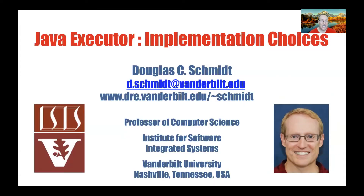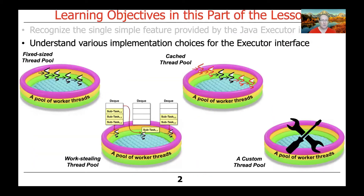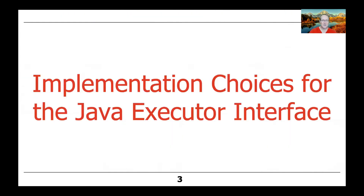Now, let's talk about how you might actually implement a Java executor. So far, we've really talked primarily about what the interface looks like — it's intentionally very simple. But when you want to get down and actually write some code and have things run concurrently, you've got to make some implementation choices in order to make everything come together in a coherent way. So we're going to talk about some of the different ways you can implement the executor interface.